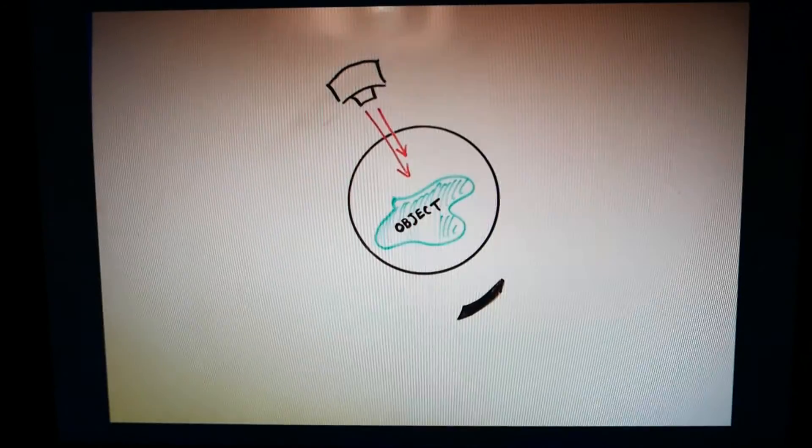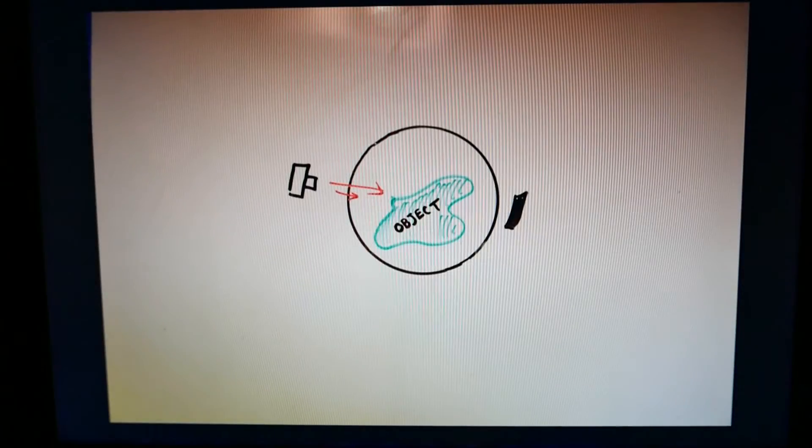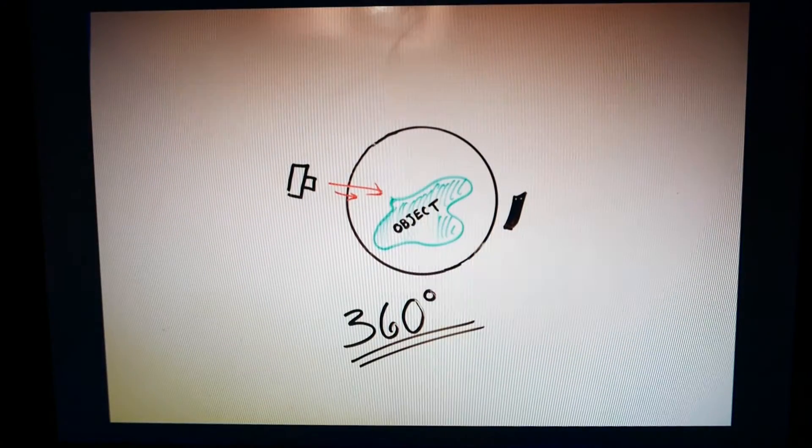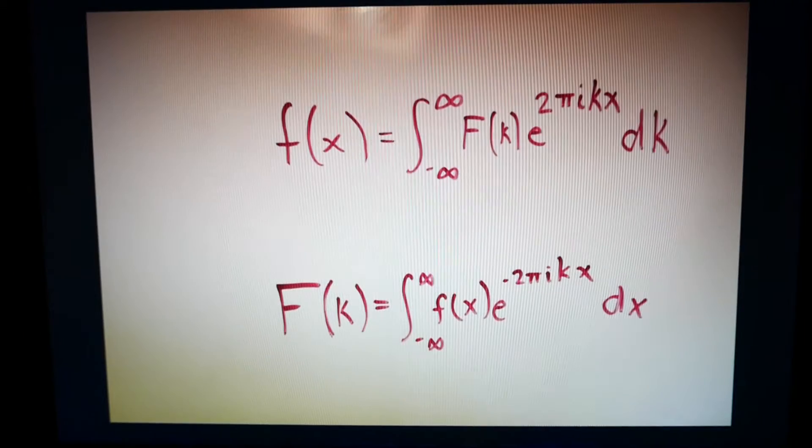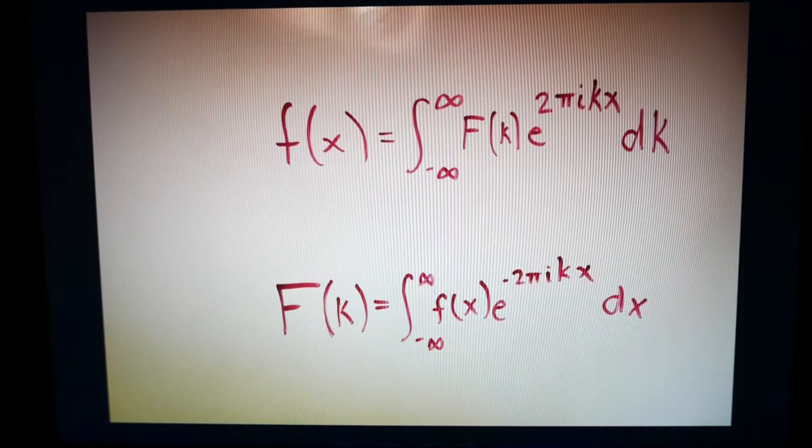Unlike an X-ray, a CT scan has the capability of gathering and compiling 360-degree views of a targeted area. The Fourier transform is what allows computers to turn this list of light intensities into a 3D image.